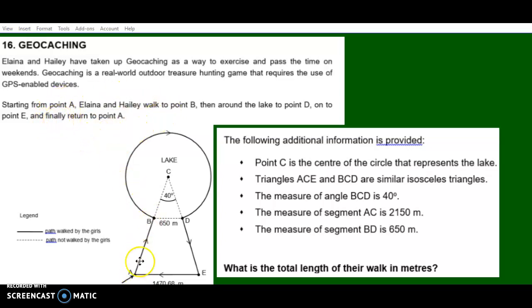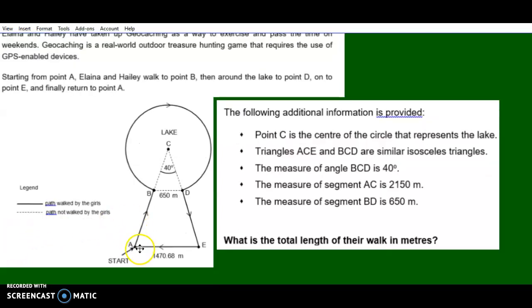Starting from point A, so here's point A. Starting from point A, Elena and Haley walk to point B, then around the lake to point D, and then back to point E and then back to point A. The following information is provided: What is the total length of their walk?